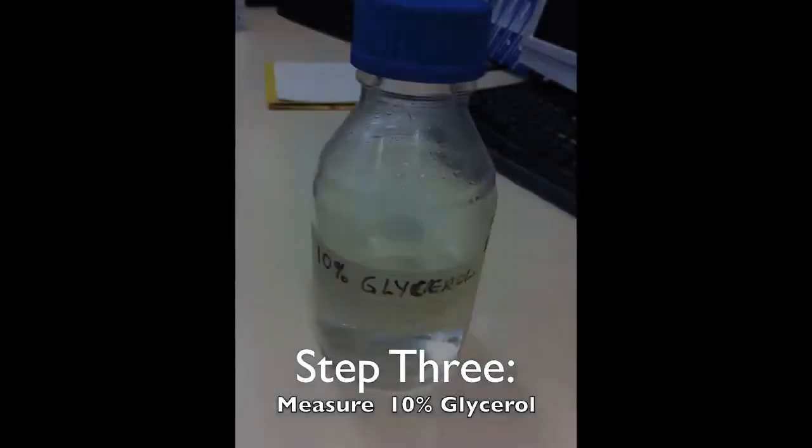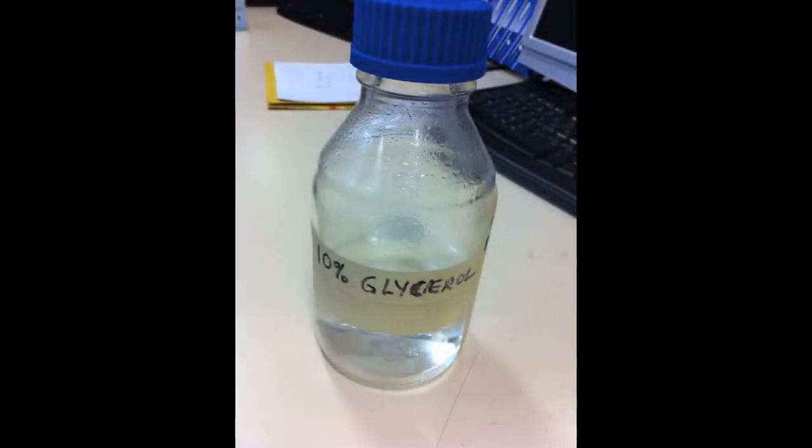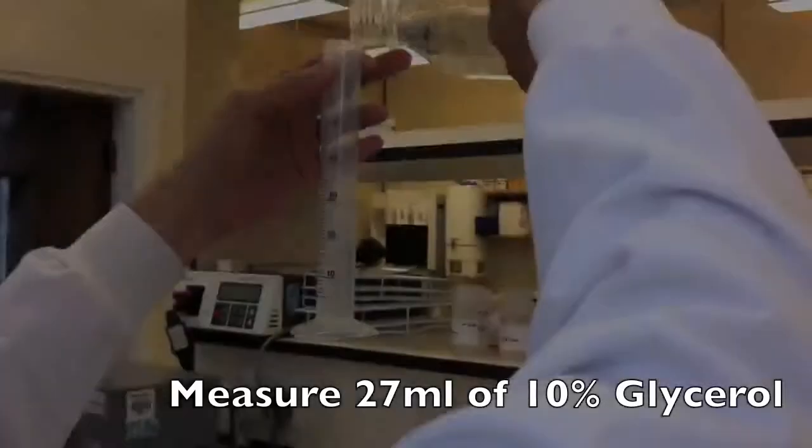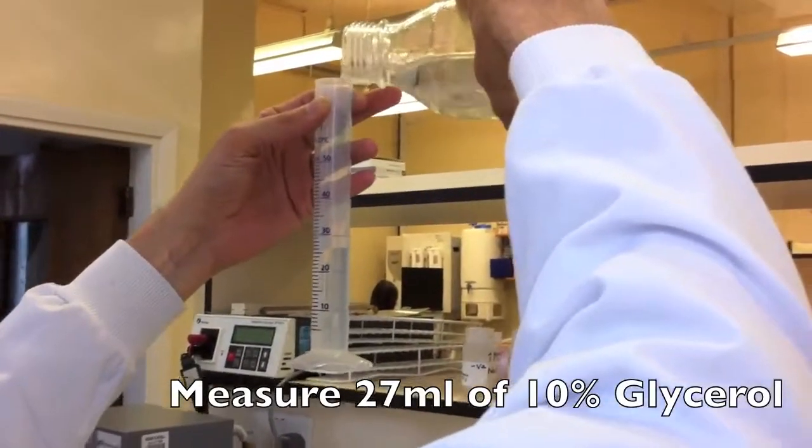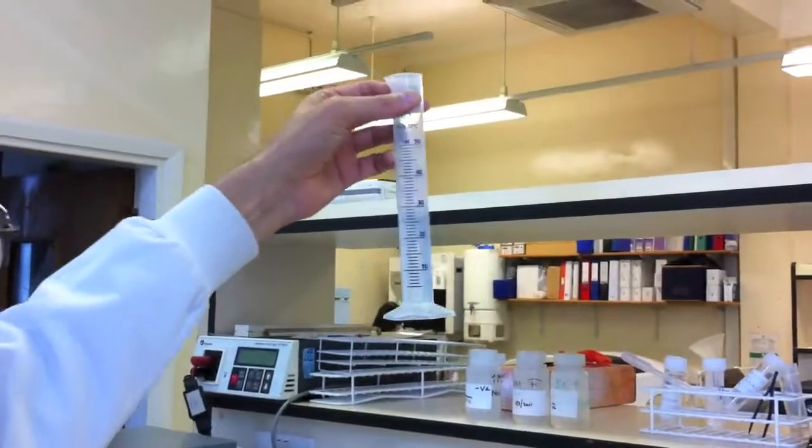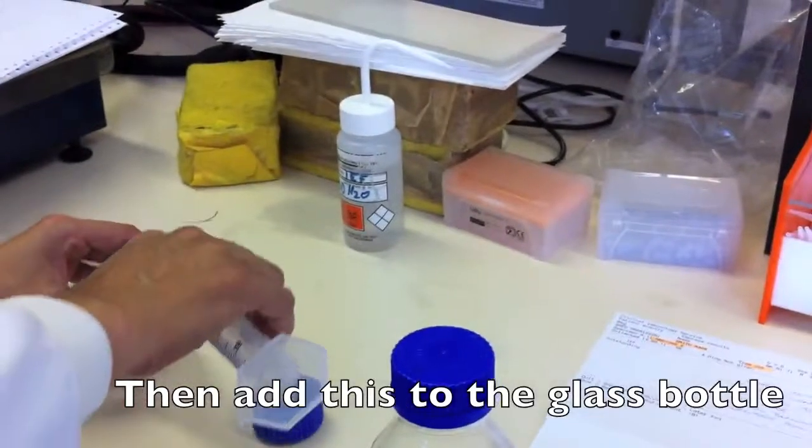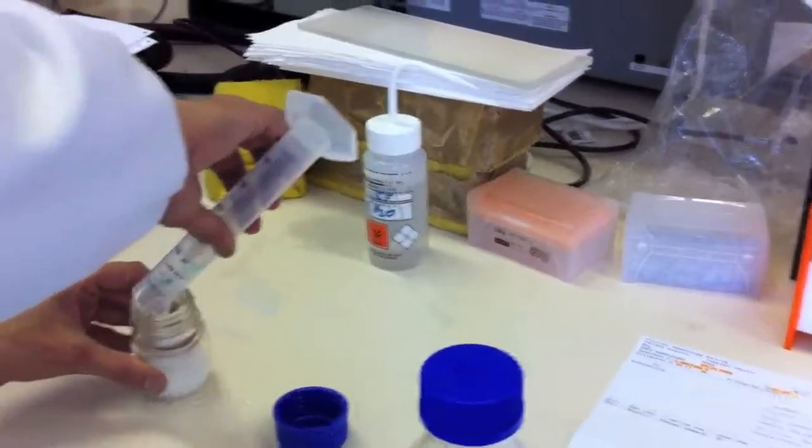The next step is to measure out the 10% glycerol solution. Measure out 27ml of 10% glycerol into the measuring cylinder provided. Then add this solution to the glass bottle containing the dry ingredients.